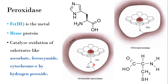In horseradish peroxidase, the axial ligand in the proximal site is histidine. The imidazole nitrogen of histidine is attached to Fe which is in the +3 state. In chloroperoxidase, the axial ligand is cysteine, containing a thiol group, and the sulfur of the thiol group is bound to Fe³⁺. Their function is to catalyze the oxidation of substrates like ascorbate, ferrocyanide, and cytochrome c using hydrogen peroxide.